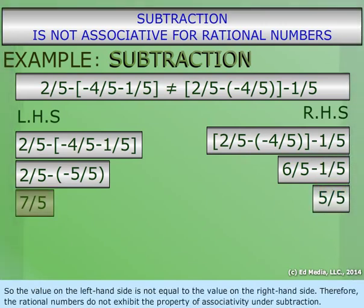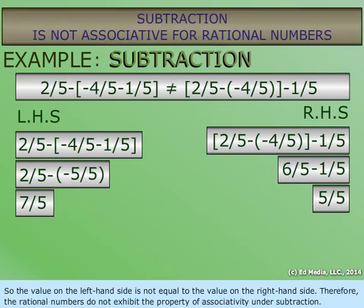So, the value on the left-hand side is not equal to the value on the right-hand side. Therefore, the rational numbers do not exhibit the property of associativity under subtraction.